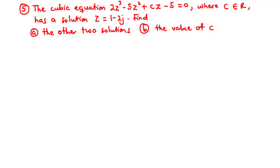Let's try this question. The cubic equation 2z³ minus 5z² plus cz minus 5 equals 0, where c is a member of the real numbers, has a solution z equals 1 minus 2j. We are asked to find: (a) the other two solutions, and (b) the value of c.